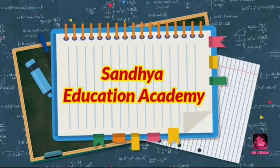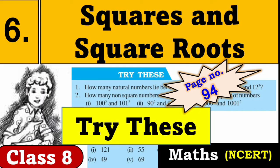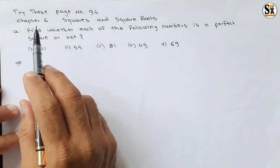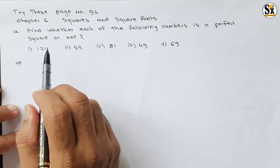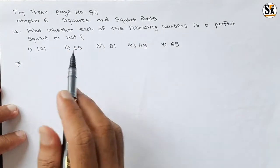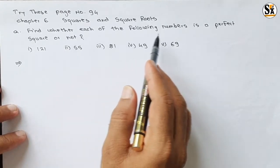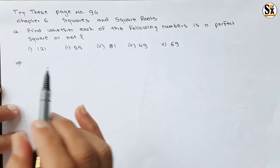Hello dear all, welcome to Sunday Education Academy. I am Santosh here. We will see the question under the 'Try This' section, page number 94, chapter: Squares and Square Roots. Let's start our video. The question is: find whether each of the following numbers is a perfect square or not.